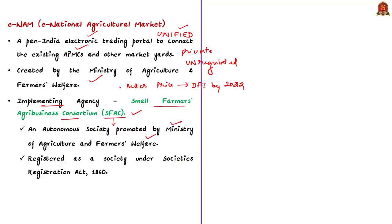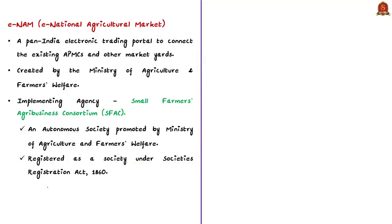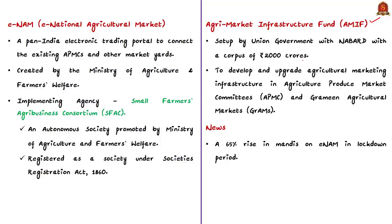For your prelims preparation, remember that e-NAM is implemented by the Small Farmers Agri-Business Consortium. In addition, a logistics module has been provided on the e-NAM platform providing efficient logistic facility for inter-mandi and interstate trade. Also note that the Union Government has set up an Agri-Market Infrastructure Fund (AMIF) with NABARD, with a corpus of about 2,000 crores. This fund is used to develop and upgrade agricultural marketing infrastructure in APMCs and in Grameen Agriculture Markets (GrAMs). The existing about 22,000 rural haats will be developed and upgraded into Grameen Agriculture Markets.